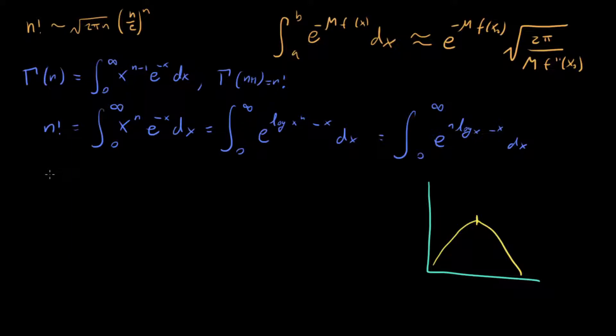So we can find the maximum by taking the derivative, setting it equal to zero. So if we do take the derivative, n log x minus x, and we enforce this equals zero.